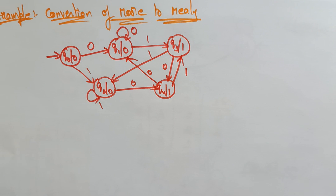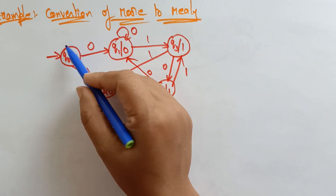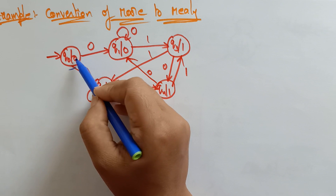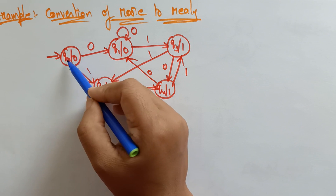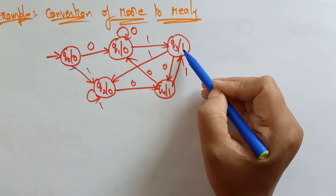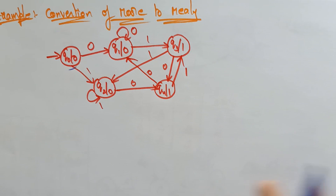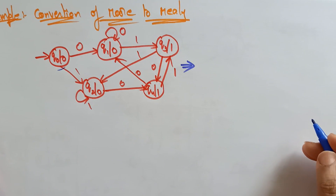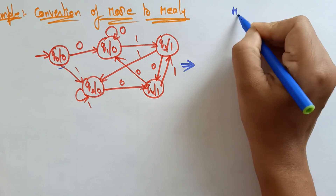Welcome back students. Let's see another example of how to convert a Moore machine to a Mealy machine. Here we are given one Moore machine and I want to convert it to a Mealy machine. You can identify this as a Moore machine because the output depends only on the present state, not on the present input. The state includes both the state and its output together in one node. First, I want to draw the state transition table for the Moore machine.